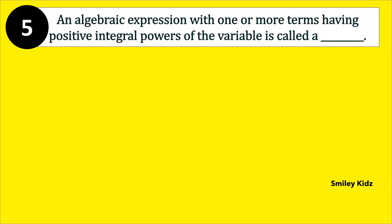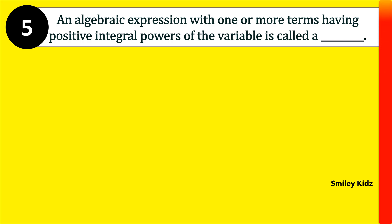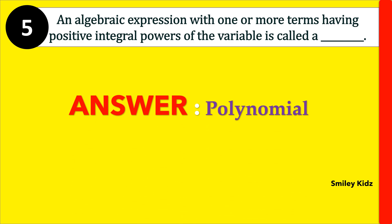Moving to question number 5. An algebraic expression with one or more terms having positive integral powers of the variable is called a dash. The right answer is polynomial. An algebraic expression with one or more terms having positive integral powers of the variable is called a polynomial.